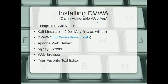To install Damn Vulnerable Web App you'll need Kali Linux 1.x to 2.0, which is what we're running here - the newest Kali Linux 2.0 - but any Unix/Linux OS will do. You'll also need the actual DVWA software, Apache web server (pre-installed on Kali Linux), MySQL server for the database backend, a web browser, and your favorite text editor - mine is VIM.